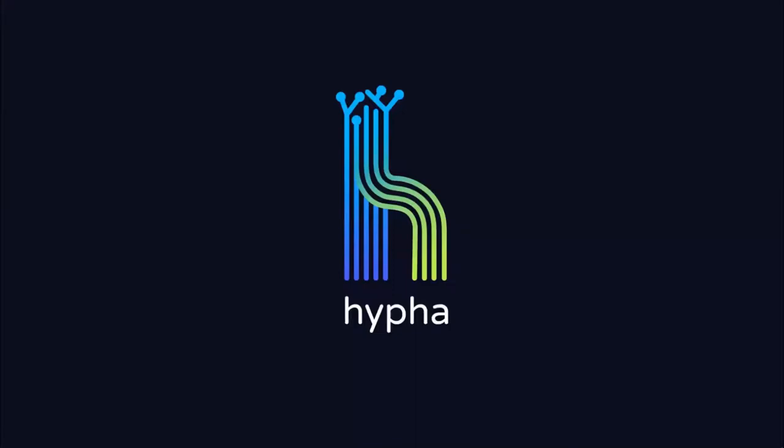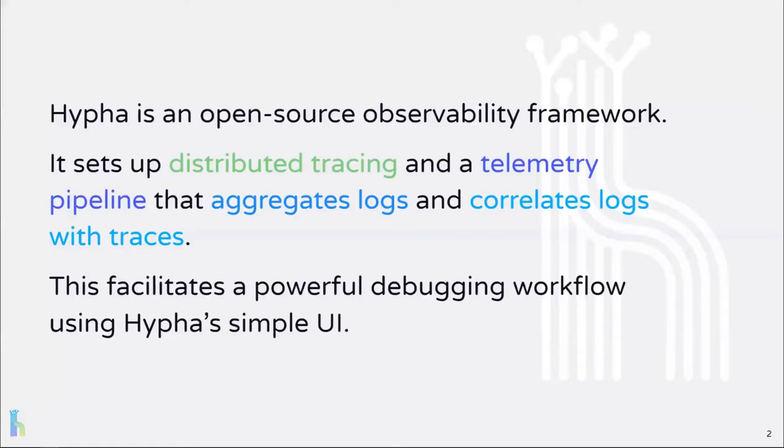Hello, everyone, and thank you for joining us. My name is Yuliu, and together with my teammates Josh, Steve, and Isaac, we built Haifa. Haifa is an open-source observability framework. It sets up distributed tracing and a telemetry pipeline that aggregates logs and correlates logs with traces. This facilitates a powerful debugging workflow using Haifa's simple UI.